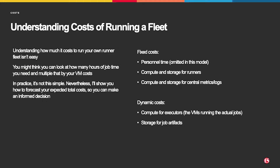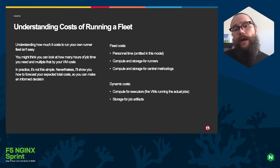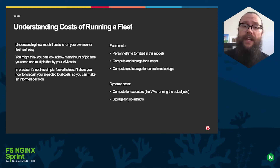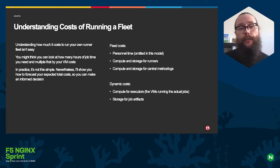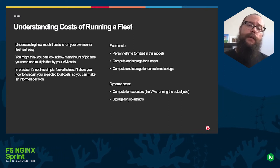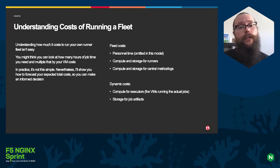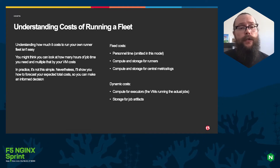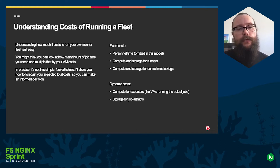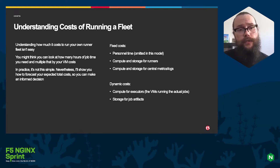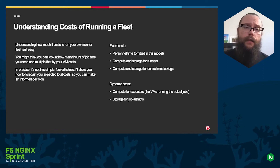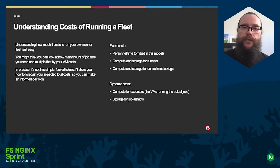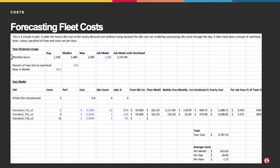Understanding costs of a runner fleet: GitLab is about 60 cents an hour, and you can probably get a comparable VM from a cloud provider for 10 cents an hour, but you can't do an apples-to-apples comparison. There are costs to consider. First, there are fixed costs: your time setting up and configuring things, compute and storage for the runner itself — that long-lived process — and you'll want to get runner logs and metrics into a system like OpenSearch. You'll need compute and storage for that, and then there are VM costs for the actual jobs.